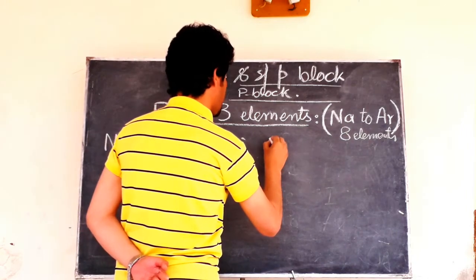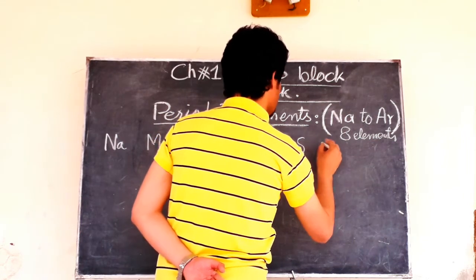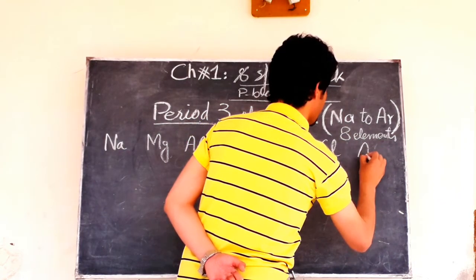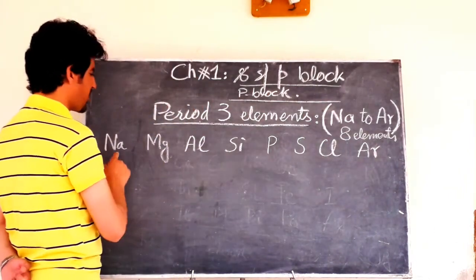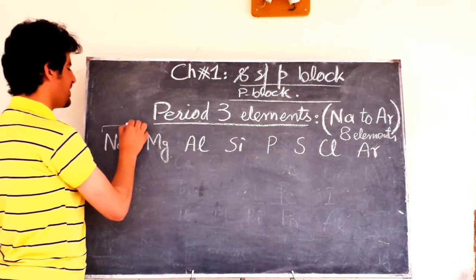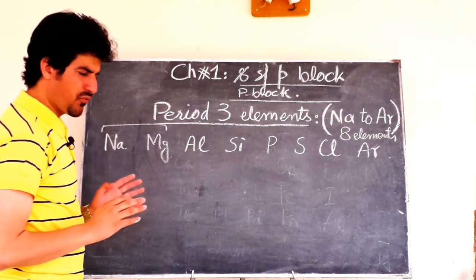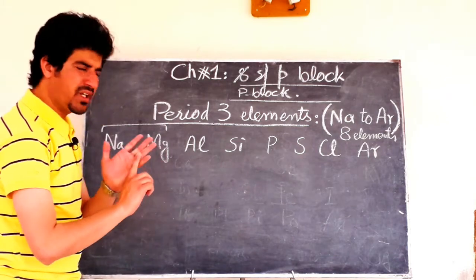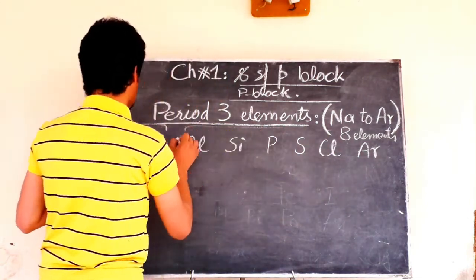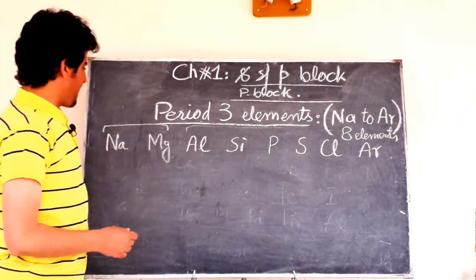After silicon we have phosphorus, then sulfur, then chlorine, then argon. These are the key elements — seven and eight — of Period 3. This period consists of elements from the s-block and p-block. In your book you can check: these two are s-block and the rest are p-block.